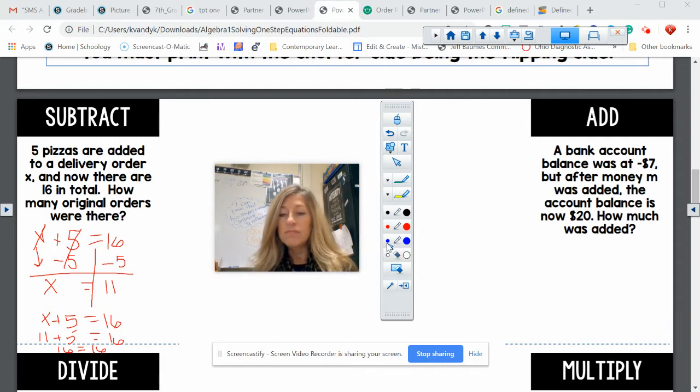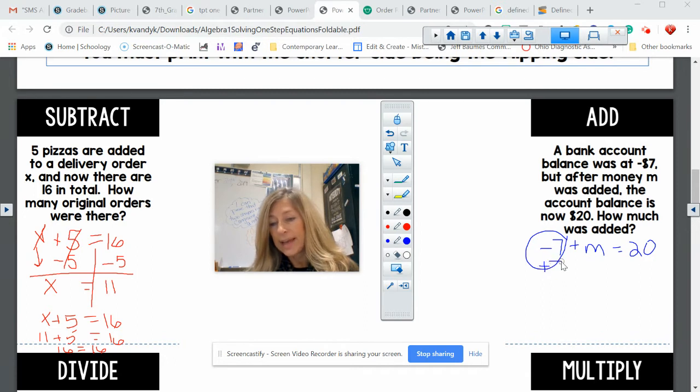Let's go over here to addition. A bank account balance was at negative seven. But after money M was added, the account balance was 20. How much was added? So this is the equation we have. Now notice this. This is a negative seven. We all know negative seven is the same thing as subtraction. So what's the opposite? Well, to get rid of this, to get M alone, I need to add the seven to both sides. So let's add that over here and here. In case you forgot, both sides mean of the equation on the other side of the equal sign. So what am I left with? I'm left with M. And on this side, I'm left with 27. And this means M equals 27.